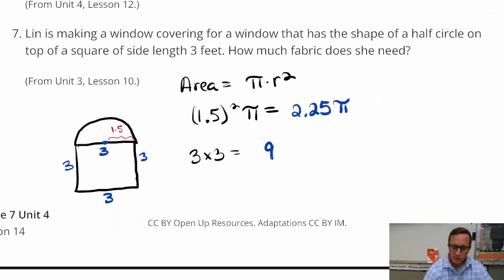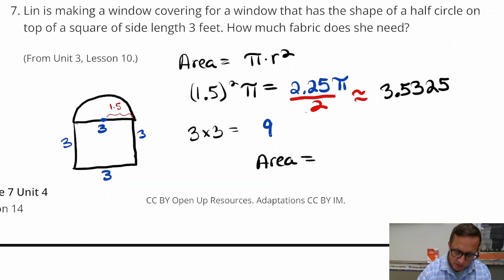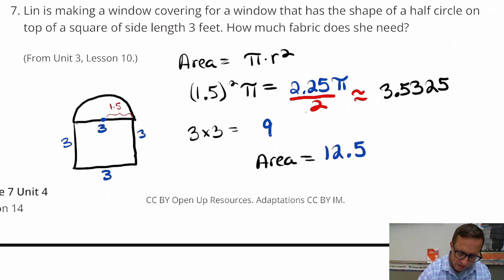I forgot something, do you guys know what I forgot? I forgot to divide this by two because this is a half circle. This would be for a full circle but we want to keep it halves here. So you got 2.25 times pi, I'm going to use 3.14 for pi, and I'm going to divide that by two. And I get 3.5325, and so just add that to nine and you're going to get total area is going to be 12.5 square feet.